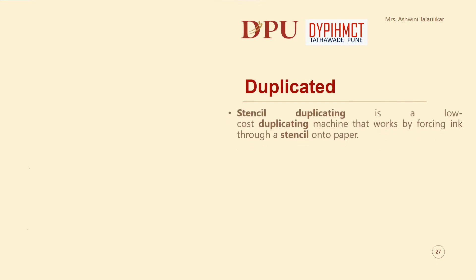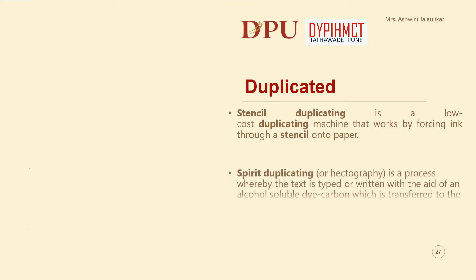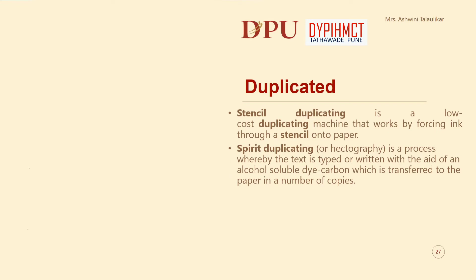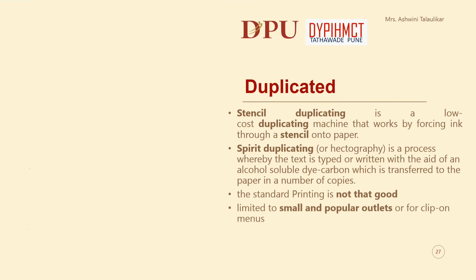Duplicated printing: stencil duplicating is a low-cost duplicating method that works by forcing ink through a stencil onto paper. Spirit duplicating is a process whereby the text is typed or written with the aid of an alcohol-soluble dye carbon which is transferred to the paper in a number of copies. The standard of printing is not that good and is limited to small and popular outlets or for clip-on menus.